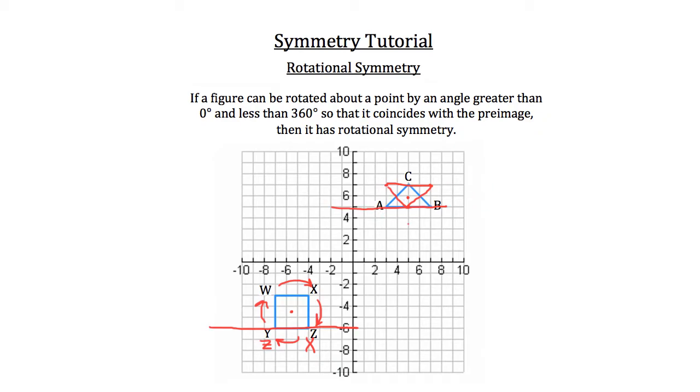There's no way that you could rotate this original triangle ABC about that center and get it to overlap so that it coincides with the original image. It's not possible. So this figure doesn't have rotational symmetry.